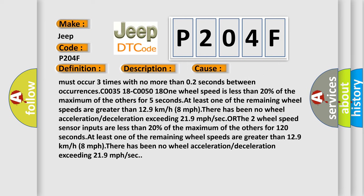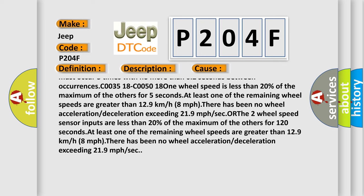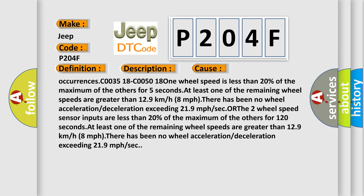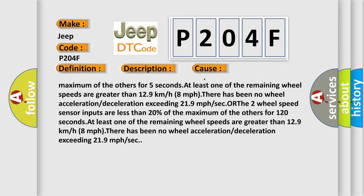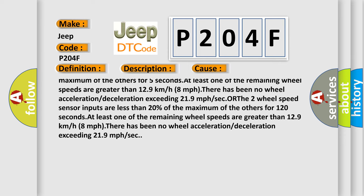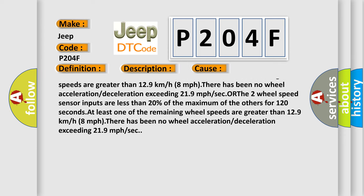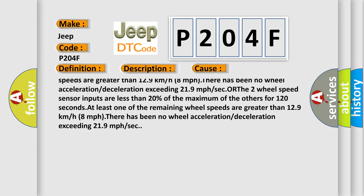C0035 18 C0050 18: One wheel speed is less than 20% of the maximum of the others for five seconds. At least one of the remaining wheel speeds are greater than 12.9 kilometers per hour (8 mph).